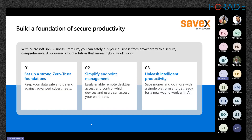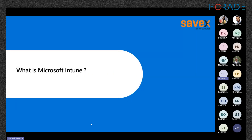So how does Microsoft secure productivity? Microsoft does this with three main things: it sets up a strong zero-trust foundation, simplified endpoint management, and also unleashes intelligent productivity with the use of AI. There are four new features included in Microsoft Business Premium that we'll go through one by one — starting with Microsoft Intune.